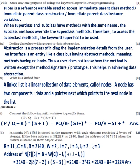Part 8: super is a reference variable used to access immediate parent class method, immediate parent class constructor, or immediate parent class instance variables. When superclass and subclass have methods with the same name, the subclass methods override the superclass methods.